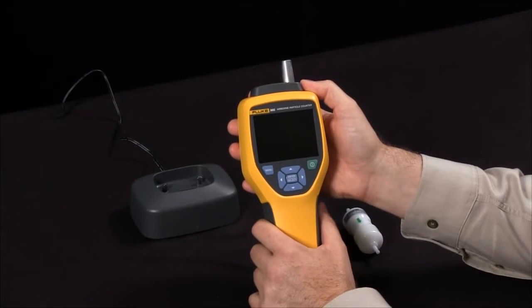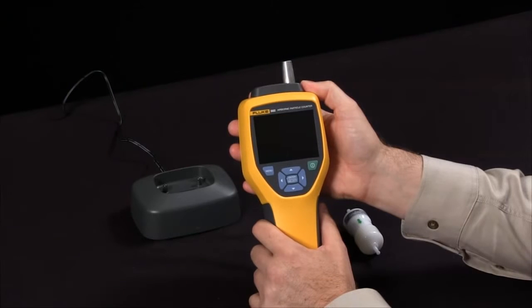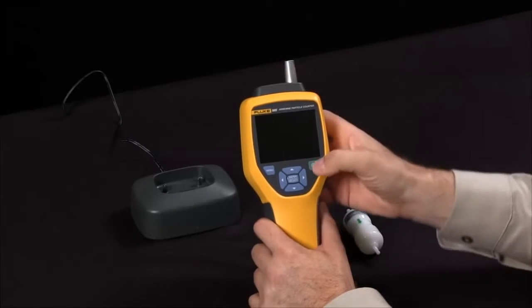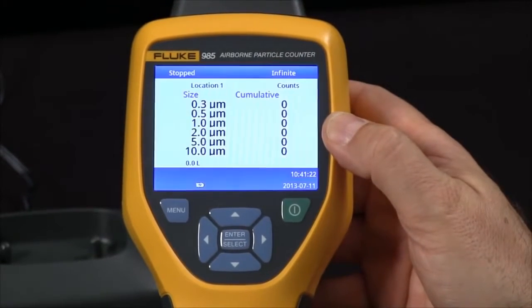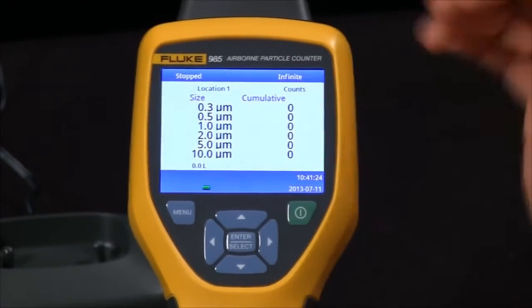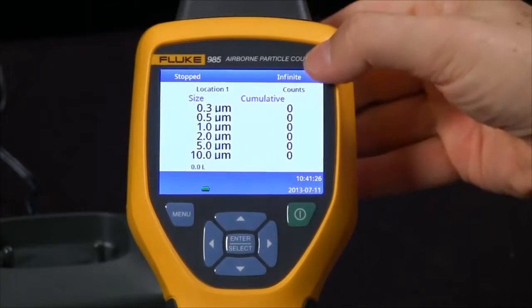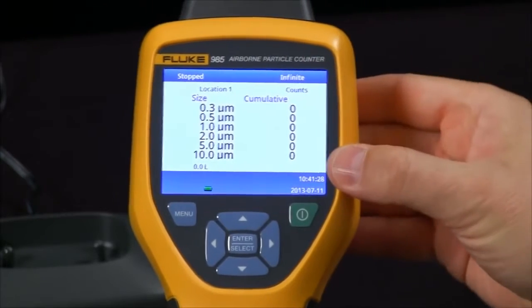How do I take measurements with the Fluke 985 airborne particle counter? Simply power on the device and your home screen will show you that we are sampling particulates in six different sizes, everything from 0.3 micron up to 10 micron.